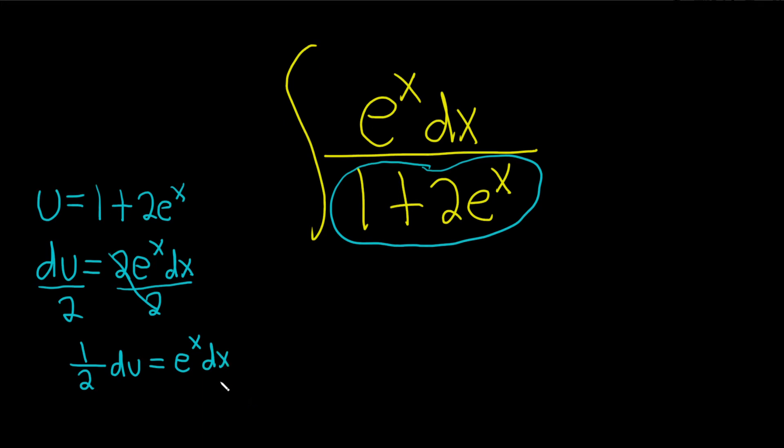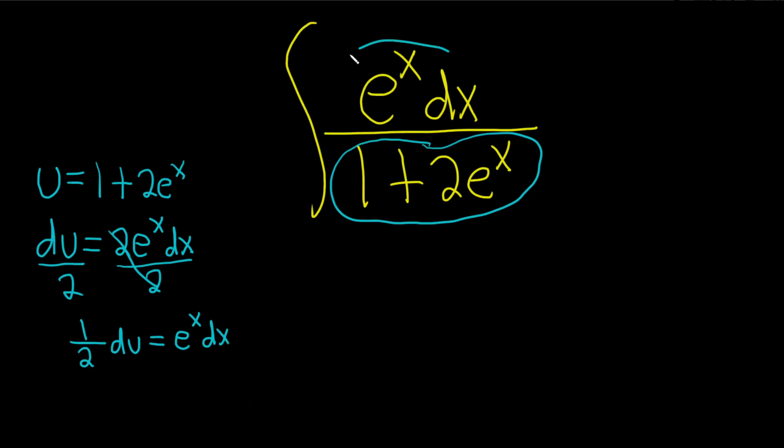So now e to the x dx is 1 half du. So that's 1 half du. And what's left? Well, it would be 1 over u. That's your u on the bottom, and then this is your du.